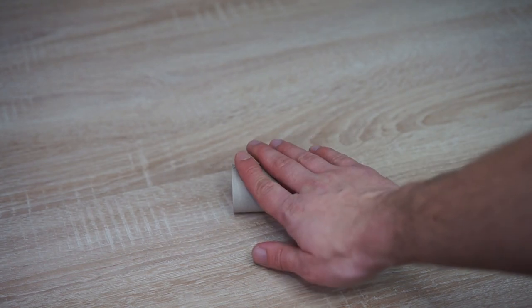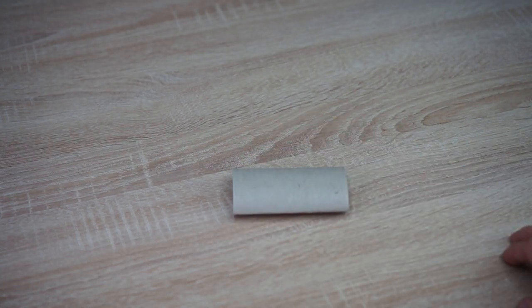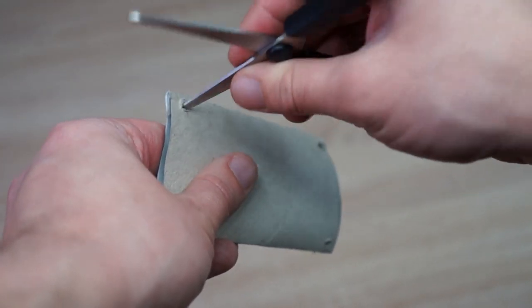Instead let's build a swing. You can build one from a simple paper tube. Just flatten it a little and punch holes into the four edges.